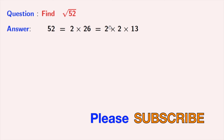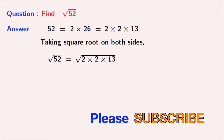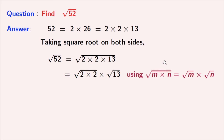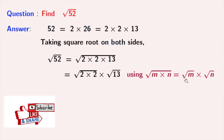Now, we will take square root on both sides, and doing that we get root 52 is equal to square root of 2 times 2 times 13. Now, we will write it as square root of 2 times 2, times root 13. Here we have used this fact: square root of m times n is equal to root m times root n, where m is 2 times 2 and n is 13.